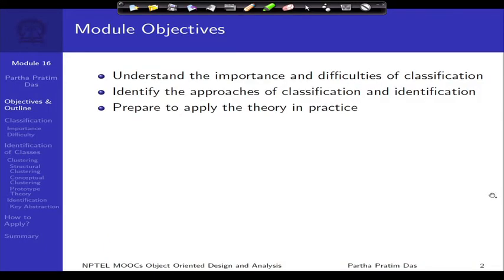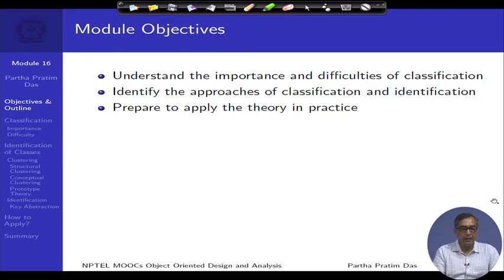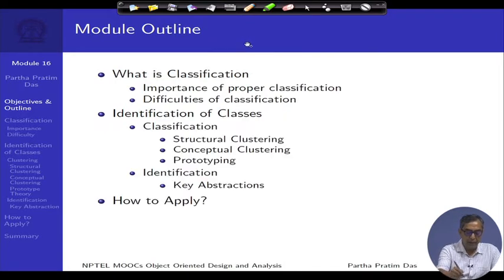This module is to understand the importance and difficulties of classification. We have seen in the earlier discussion that whatever way we look at the system, it is very critical to identify objects and classes. Given the whole bunch of concepts and dynamics of the system, it is a critical requirement to classify them according to certain commonalities which we can capture in terms of classes. There has been a lot of work on this in terms of classical approaches followed by several modern approaches. We will focus very specifically on how we can adopt and apply them in practice.